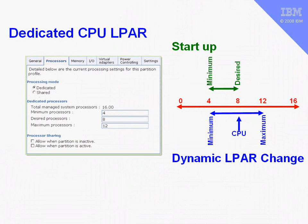Here's a quick reminder for the dedicated CPU logical partitions — this is the panel we use when creating a logical partition. We can see that dedicated is selected here, and we have three numbers: the minimum processors, the desired, and the maximum. When we start up our logical partition, it will attempt to get the desired number of processors — in this case, eight. If it finds eight CPUs available, it will start with eight. But if it can't find all eight and can only find seven or six, as long as it's above the minimum it will still start with a lower number. If it can't get the minimum number of CPUs, it will put up a warning and not start the logical partition.